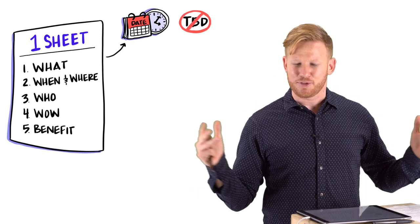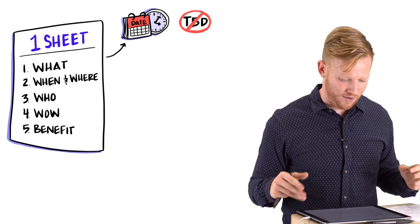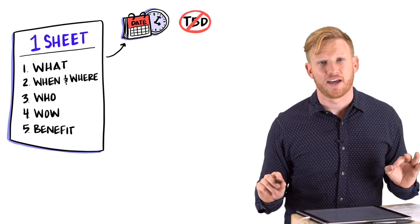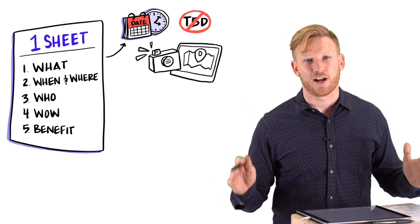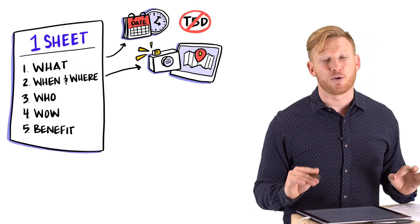So even if those are TBD, don't make them TBD. Give work in progress text. Then what you want to do is you want to outline the when and the where of the event. If it's a cool venue, take pictures of the venue, throw that right on the one sheet. You really want to make this feel very real.